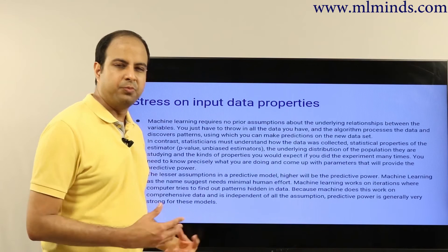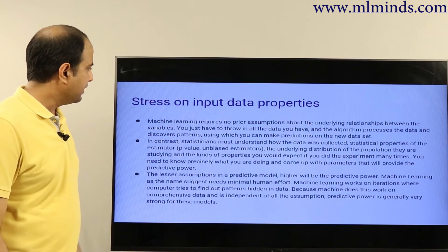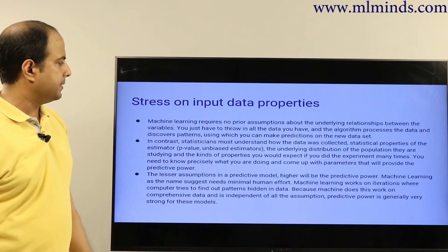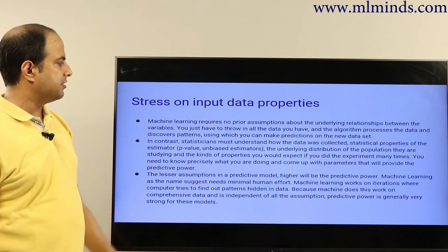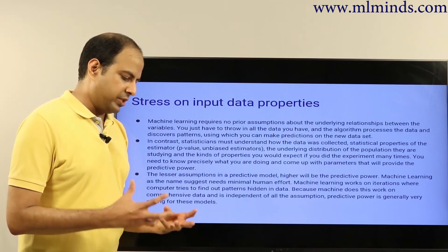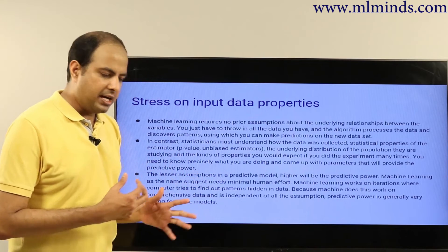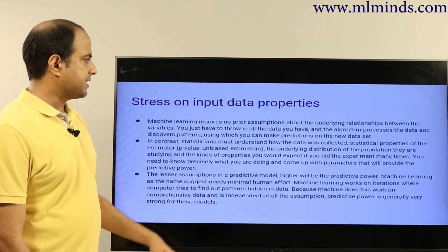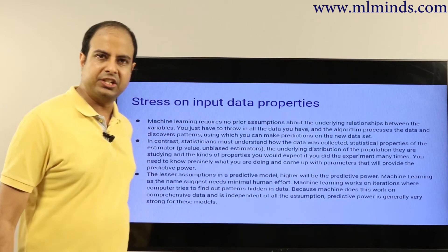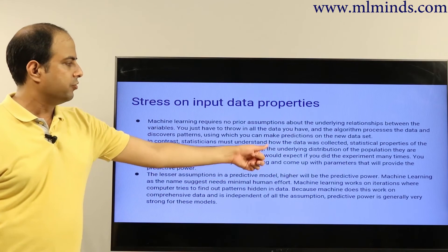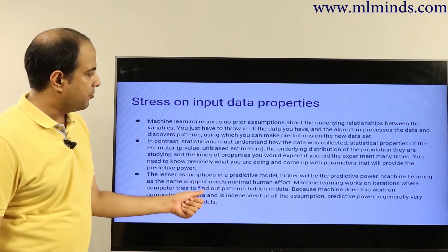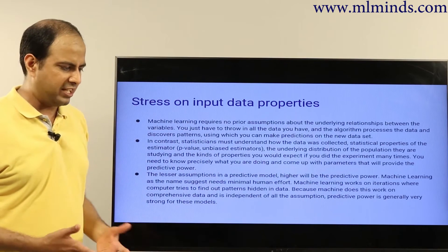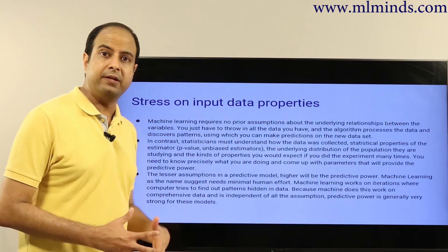So a statistician would be much more rigorous compared to a typical machine learning practitioner. Regarding stress on input data properties, machine learning requires no prior assumptions about the input data or the underlying relationships between variables. You just throw in all the data you have, and the algorithm processes it and discovers patterns to make predictions on new datasets. The machine learning model will itself figure out the variations in the data and how attributes are related. In contrast, statisticians must understand everything about the data collected — statistical properties like estimators, p-values, unbiased estimators, the underlying distribution of the population, and what properties you'd expect if the experiment were repeated many times.